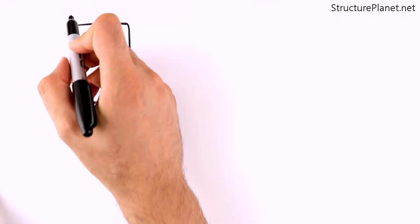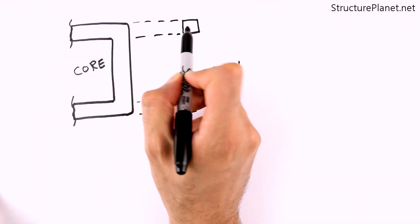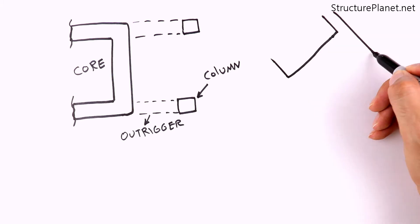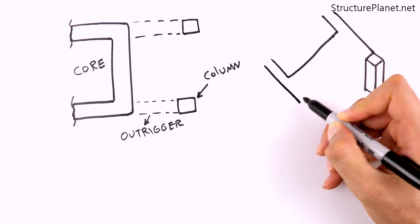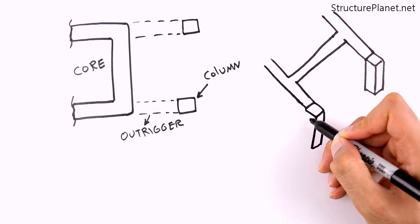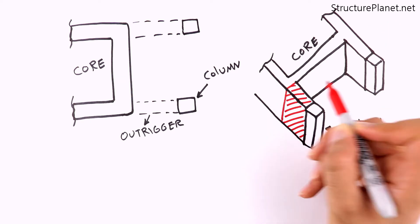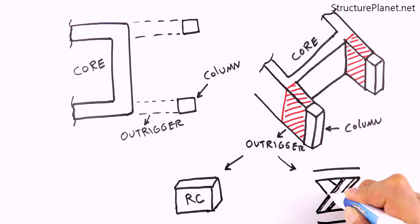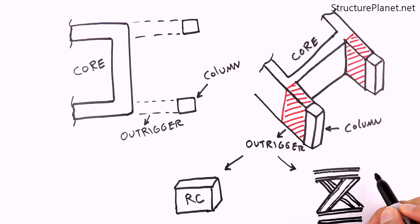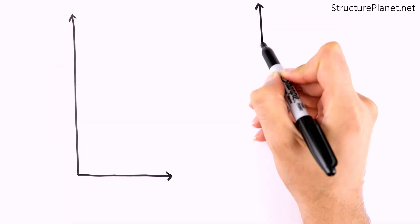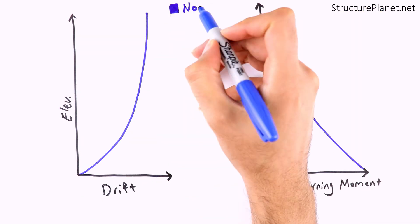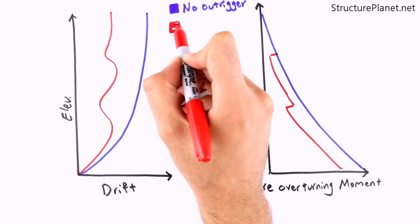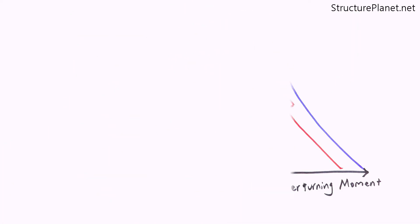These elements act as deep and stiff beams that are added in taller buildings to connect the core structure to the perimeter columns to engage the columns as part of the lateral force resisting system. Outriggers can be reinforced concrete walls or steel braces and are usually added at the mechanical floors since they block open spaces. By having outriggers, overturning moments in the core will be reduced and the building's lateral stiffness will be increased.